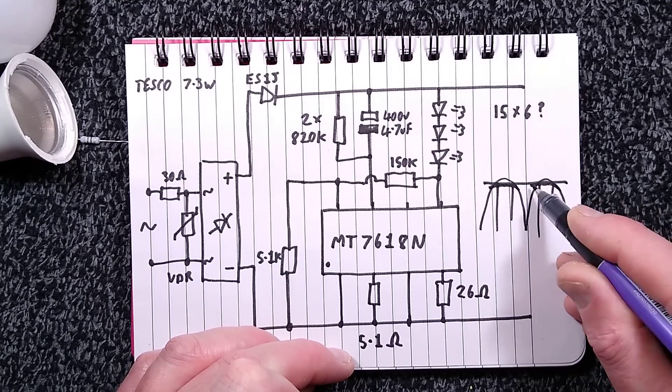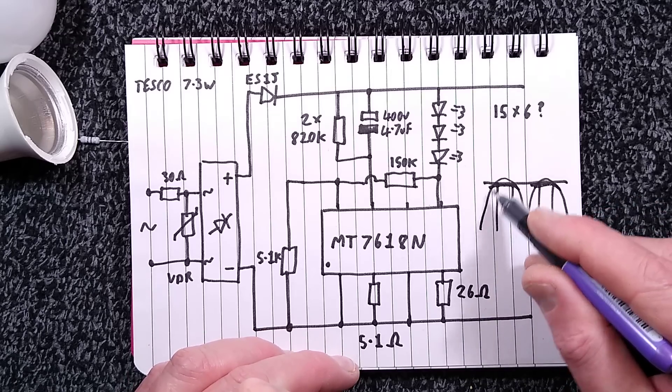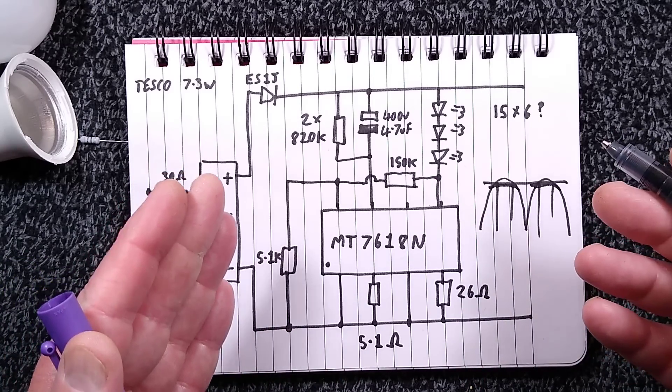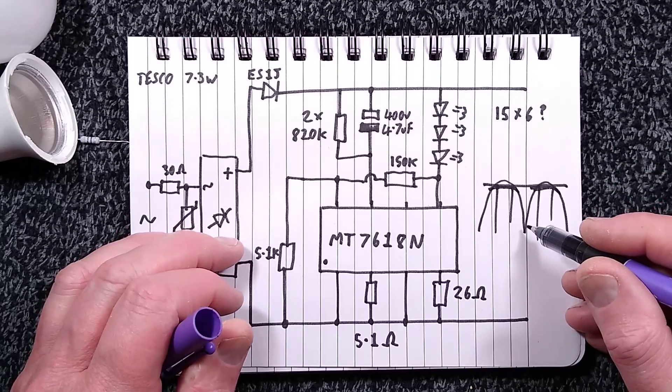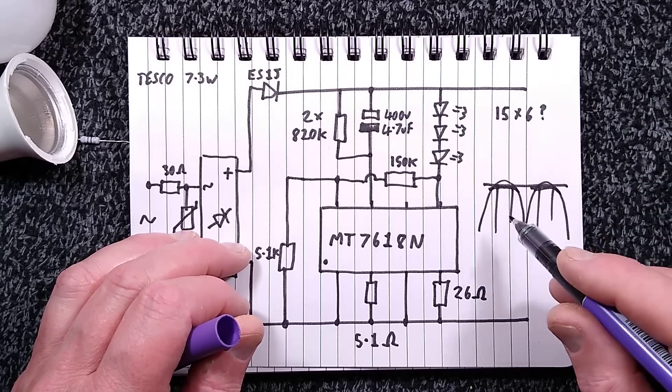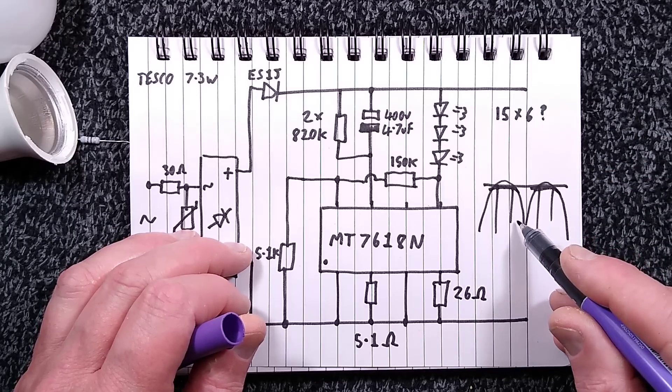And what this is doing by the look of it is trying to just smooge that out a bit, widen that a bit more over the sine wave by limiting the current into the capacitor so that it basically occupies more of the sine wave and therefore effectively improves the power factor, which is the relationship of the voltage to the current.